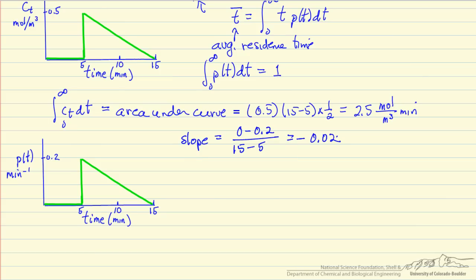And so the equation for p of t is 0 for t less than 5, t greater than 15, and then p of t is equal to minus 0.02 times t, the slope, plus the intercept.